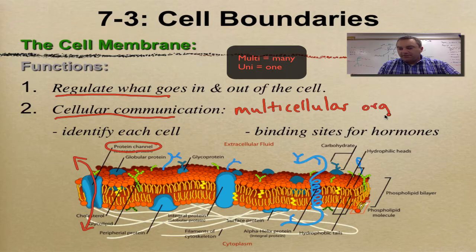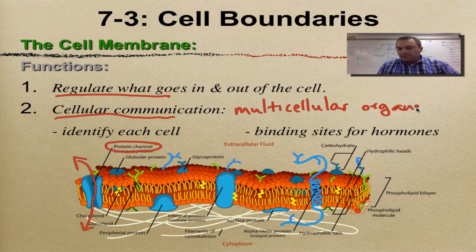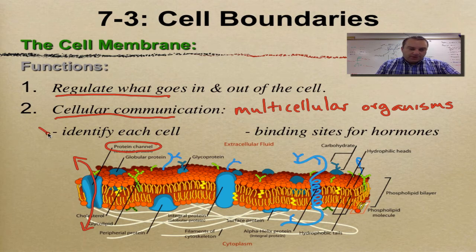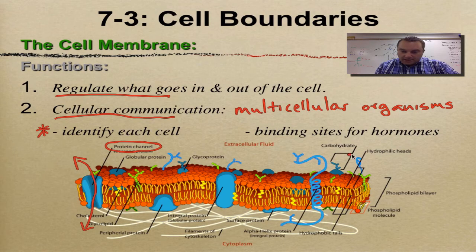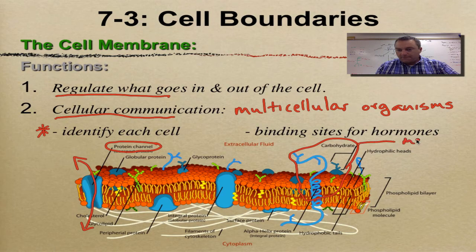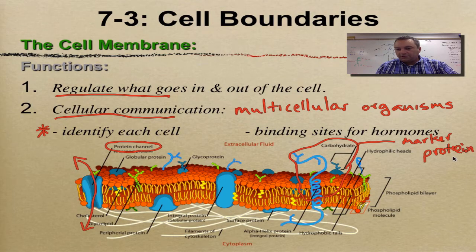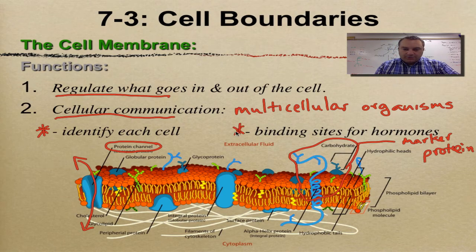Even if you're unicellular it's still important, but it's doubly important when you're multicellular. You're going to need to have things in the cell membrane that are used to identify each cell or each membrane piece — those are really known as marker proteins. And then there are binding sites for proteins as well.